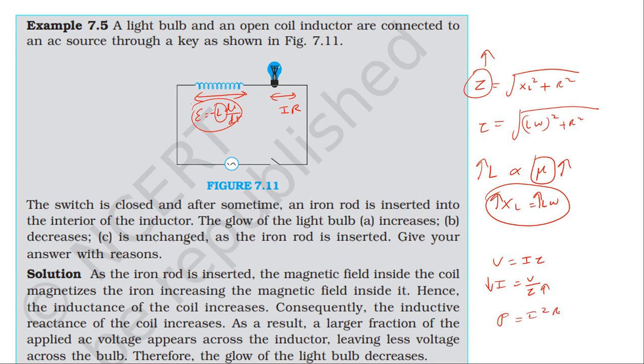I squared R - current and power. So the light bulb will glow with decreased power.